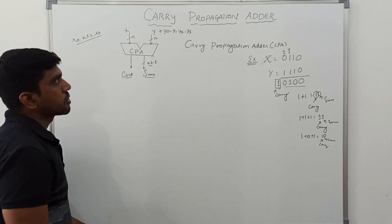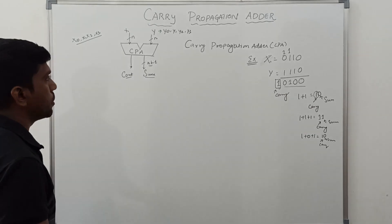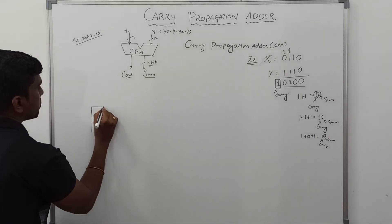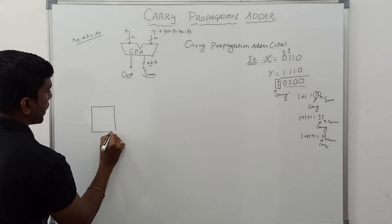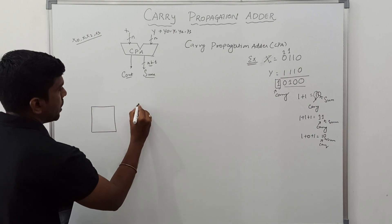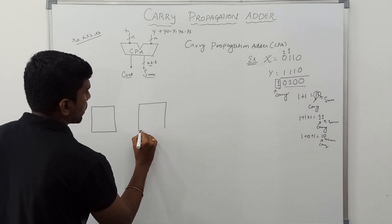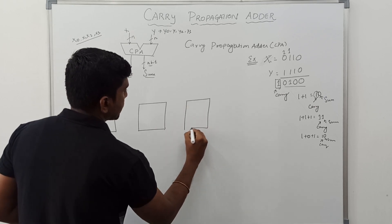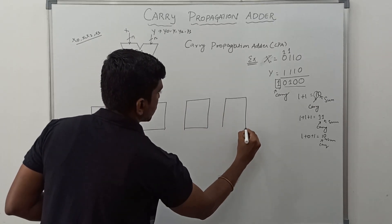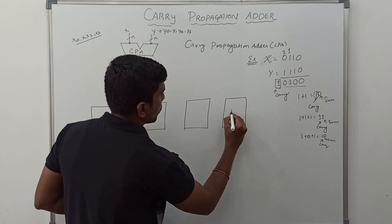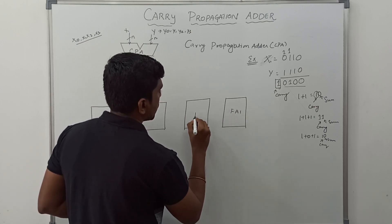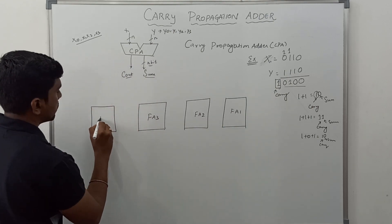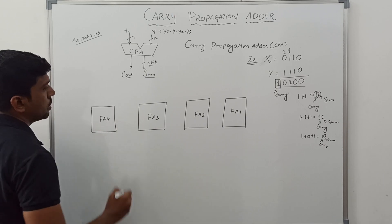Now I am going to draw the structure of a carry propagation adder using full adder circuits. In this example I am taking 4 binary values, so in this case we need 4 full adder circuits: full adder 1, full adder 2, full adder 3, full adder 4.